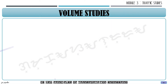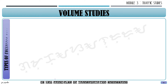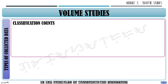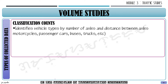The types of collected data for volume studies start with classification counts. A classification count identifies vehicle types by the number of axles and distance between axles. Examples of classification include motorcycles, passenger cars, buses, trucks, and light vehicles. In classification counts, we count vehicles based on their classification — how many motorcycles, how many private cars, how many buses, how many jeepneys pass the road.